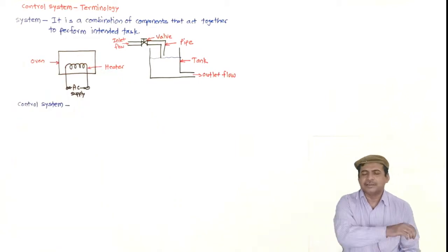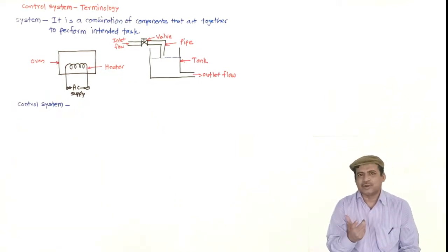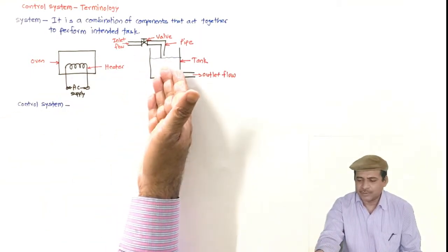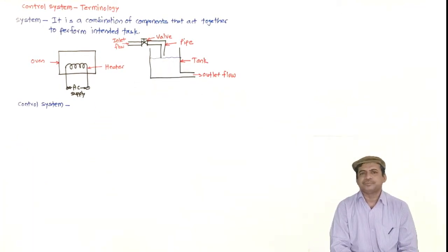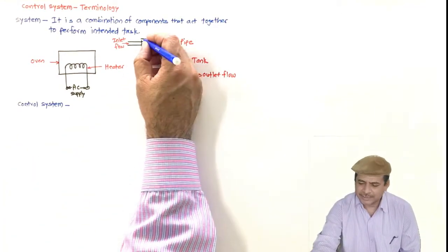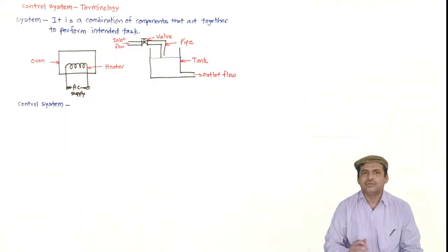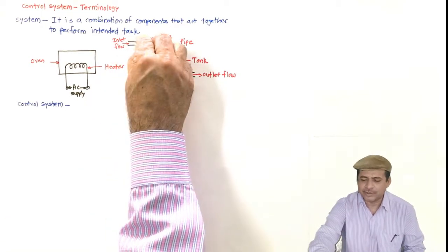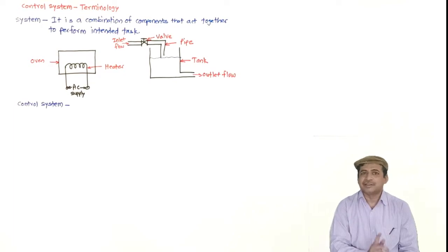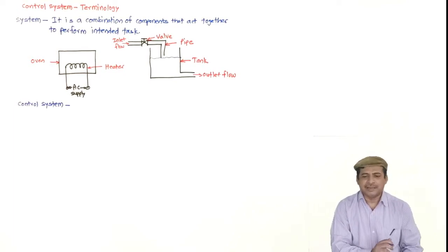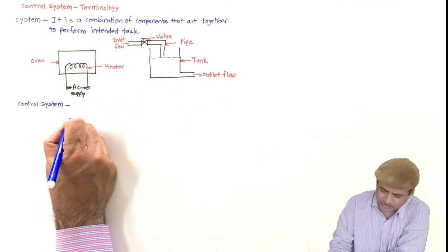We will provide variable current, but who will decide what that variable current should be? Similarly, for the tank, if we want to maintain the level at a certain desired value, by adjusting the valve position we can do so. But who will decide at what position the valve shall be kept? That will be done by the control system. So let us see, in general, the block diagram of a control system.